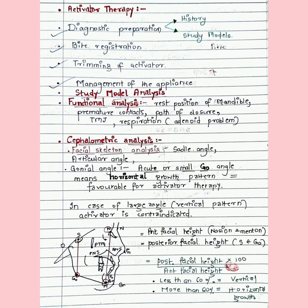We also perform cephalometric analysis. For the facial skeletal analysis, we check the saddle angle, articular angle, and gonial angle. If the gonial angle is acute or small, that means the patient is a horizontal grower — this is favorable for activator therapy. Anterior facial height is measured from nasion to menton; posterior facial height from sella turcica to gonion. The ratio of posterior facial height to anterior facial height multiplied by 100: less than 60% indicates a vertical growth pattern, more than 60% indicates a horizontal growth pattern.